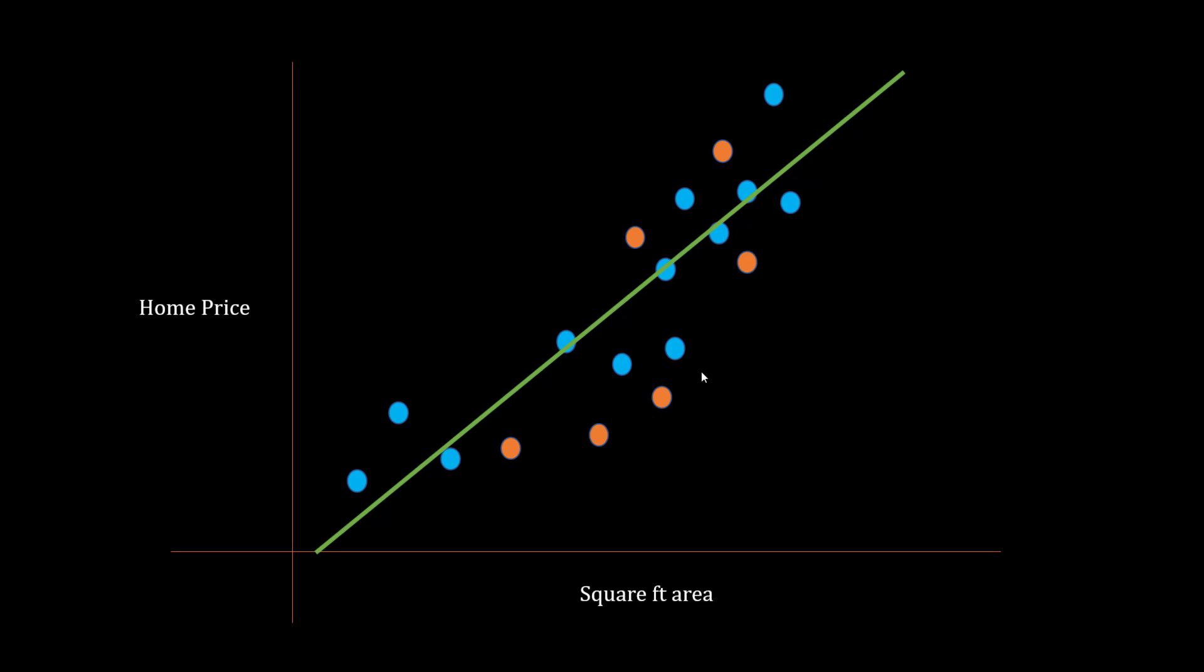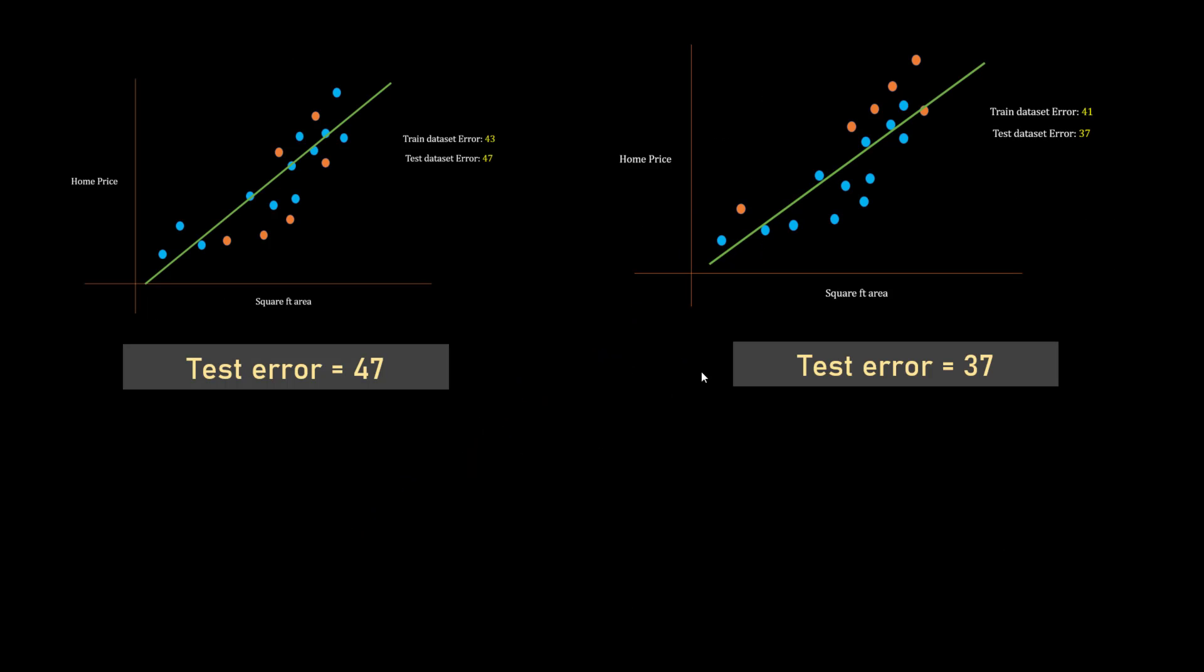Your training error is actually high. In previous case with the complex model, your training error was zero. Here it is 43 and your test data set error is around 47. When you select a different set of training data points, in both cases the line will be different, but your training and test data set error is still kind of similar. In the first case it was 47, second case it was 37.